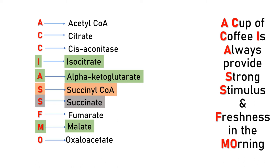The colors in the mnemonic indicate: green color and gray color indicate formation of reduced equivalents, and orange color indicates formation of GTP.